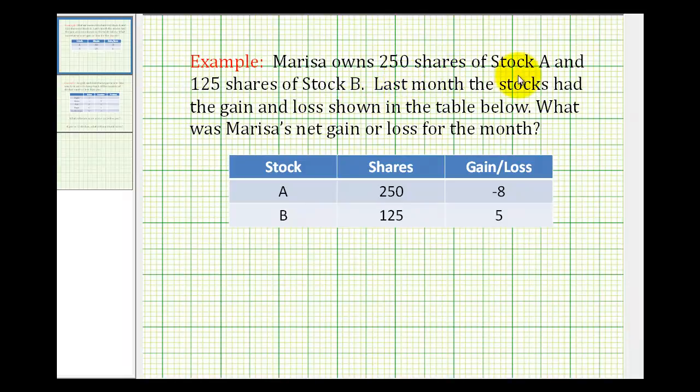Marissa owns 250 shares of stock A and 125 shares of stock B. Last month the stocks had the gain and loss shown in the table below. What was Marissa's net gain or loss for the month?